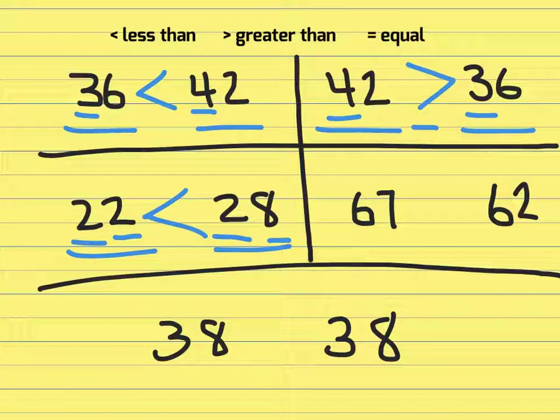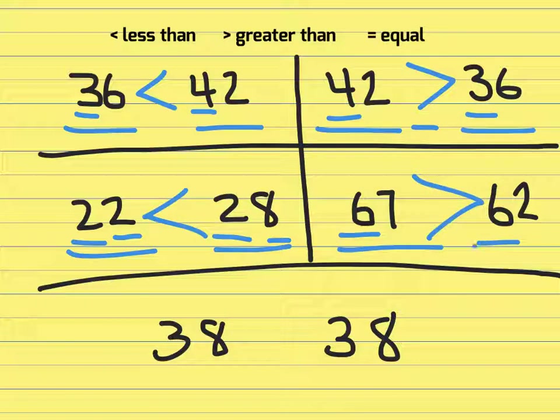Now they'll look at 67 and 62. We've got six tens, six tens. We need to go to the ones place. Seven ones compared to two ones. Seven is greater than two. Therefore 67 is greater than 62.